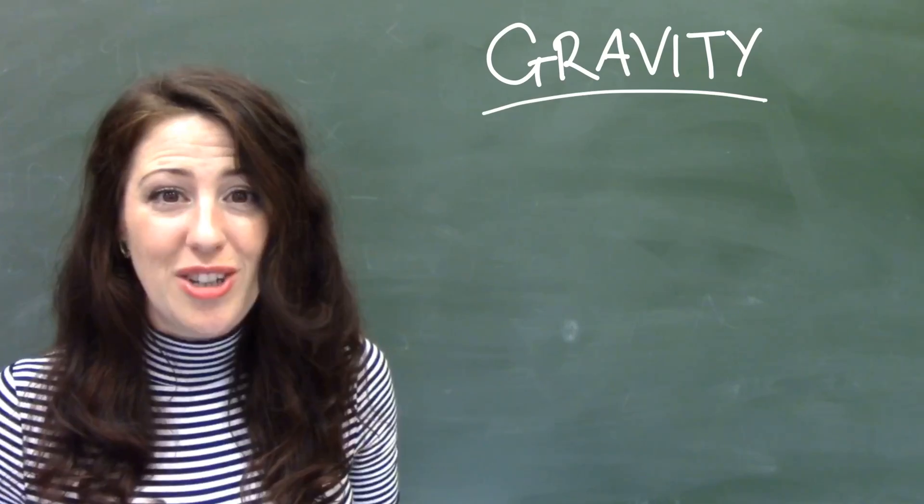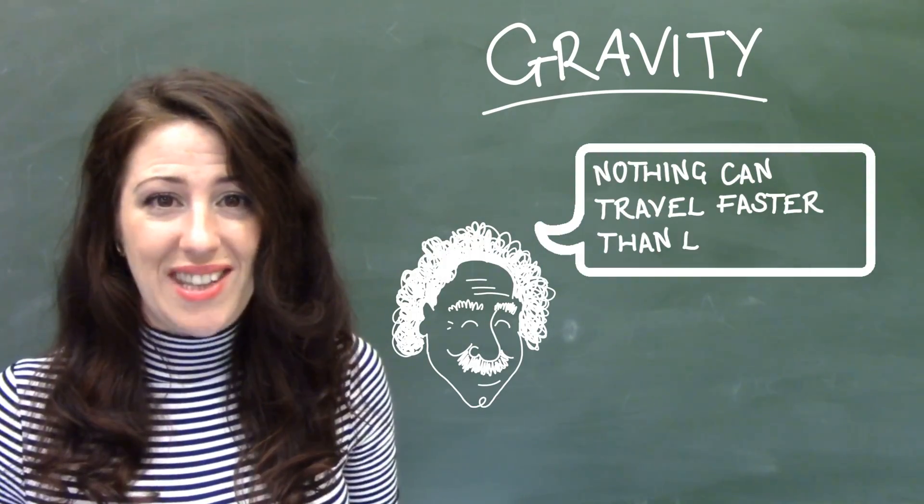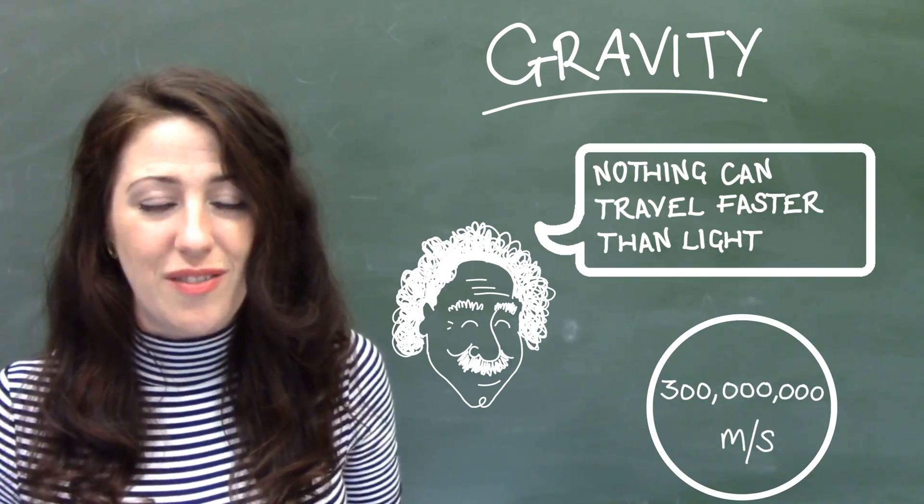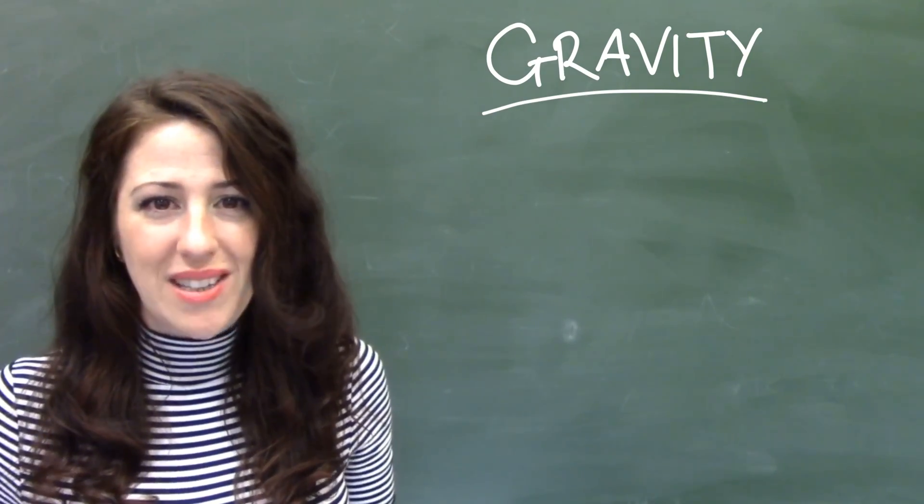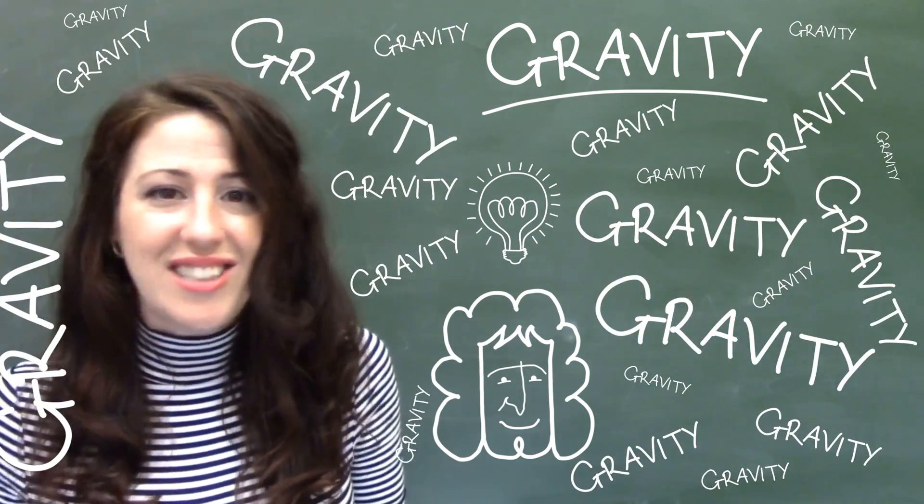Then over 200 years later, Albert Einstein came along and said the universe has a speed limit: the speed of light. That means Newton's idea of gravity acting instantly just isn't possible.